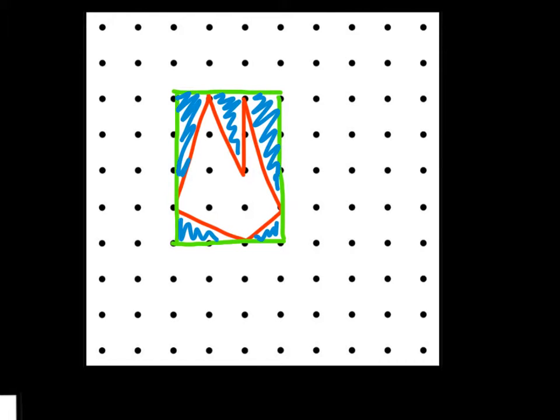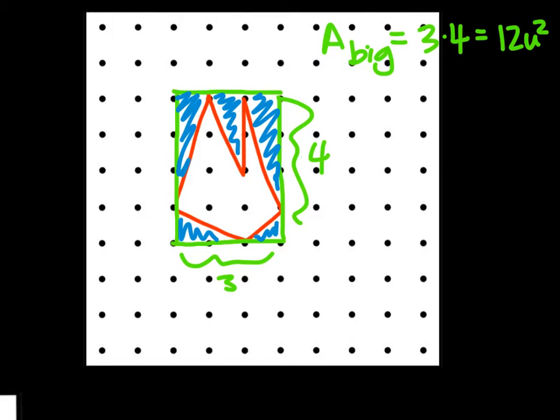So this bigger box is a 3 by 4 box. So the area of the big box is 3 times 4 which is 12 units squared. And we are going to be subtracting away all these other pieces. What we notice with these other pieces is they are typically triangles or they are rectangles or squares that we can take away.